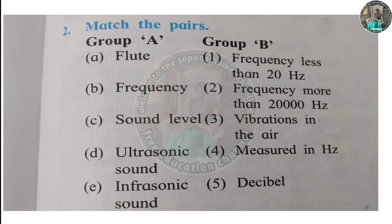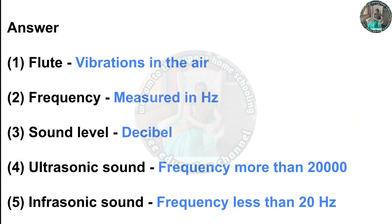Question two: Match the pairs. We need to match Group A and Group B. The answers are: Flute — vibration in the air; frequency is measured in Hertz; sound level refers to the intensity of sound; and infrasonic sound is sound whose frequency is less than 20 Hertz, which we cannot hear.